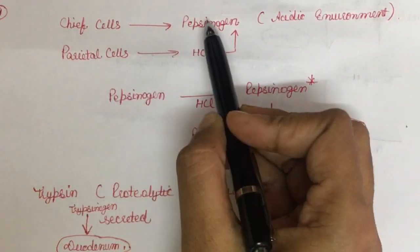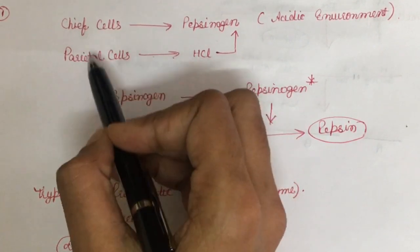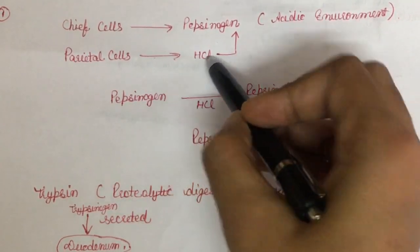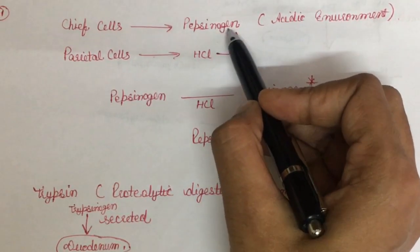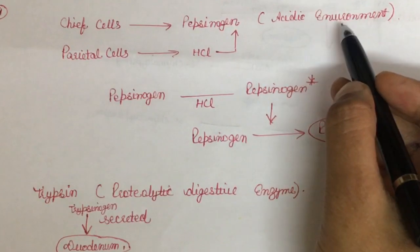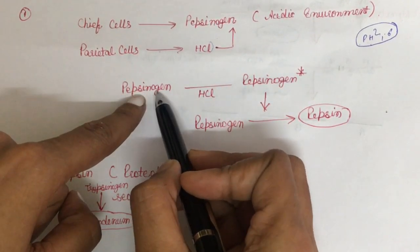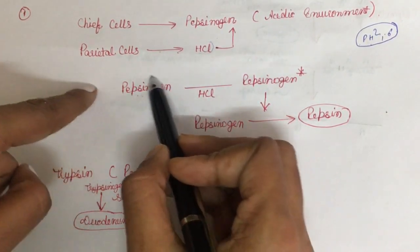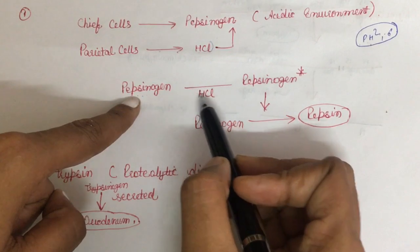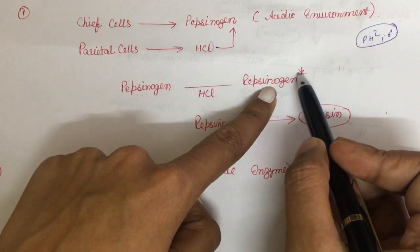Let's talk about pepsin first. Chief cells and parietal cells are present in the stomach. Chief cells release pepsinogen, and parietal cells release HCl. For the activation of pepsinogen, an acidic environment is needed — remember, certain enzymes need an acidic environment and others need an alkaline environment. When chief cells release pepsinogen, it is acted upon by HCl and broken down at specific peptide bonds.